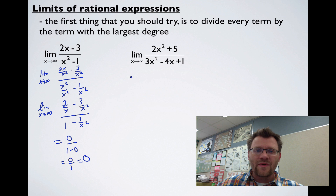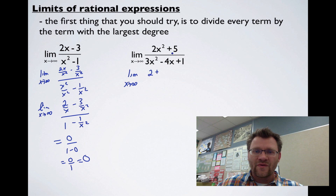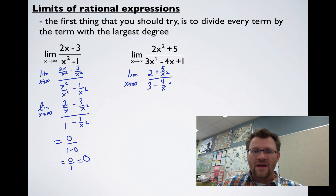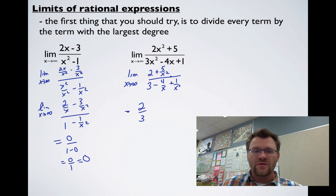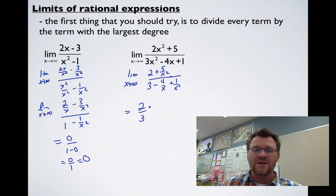In our second example we do the same thing, dividing everything by the largest degree, which is x squared. 2x² divided by x² gives 2; 5 divided by x² gives 5/x²; 3x² divided by x² gives 3; negative 4x divided by x² gives −4/x; and the last term gives 1/x². As x approaches infinity, all terms with x in the denominator become 0, leaving a limit of 2/3. Graphing this, you'll see a horizontal asymptote exactly at 2/3.